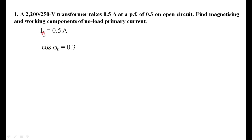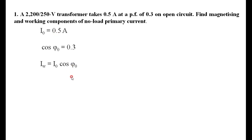I0 is known and cos phi0 is known, so it is very easy to find out IW. That is, IW equals I0 cos phi0. Substituting the given values, IW equals 0.5 times 0.3, giving IW equal to 0.15 amperes, which is the working component of the no-load current.